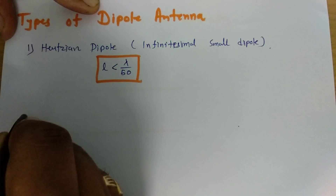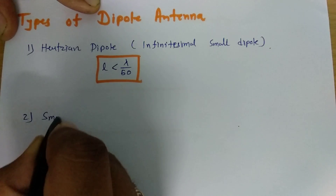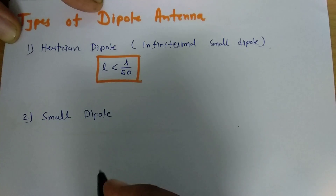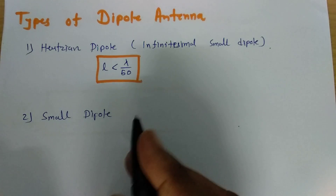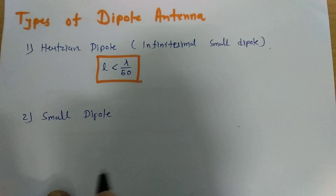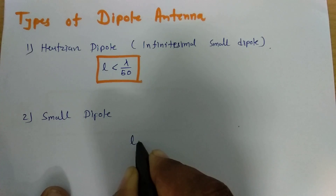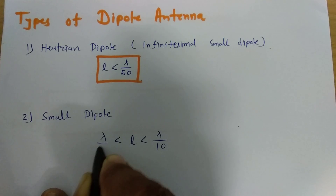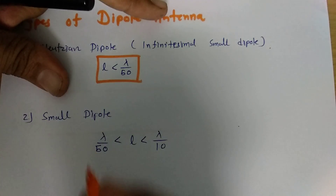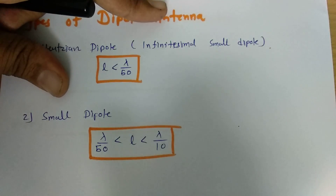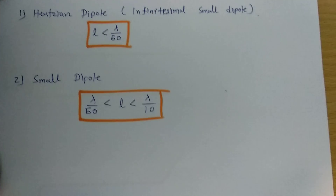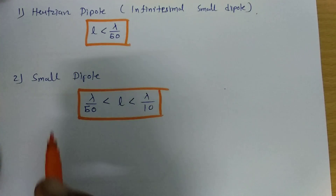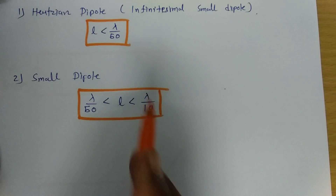The second dipole antenna is the small dipole antenna. Small dipole antenna length is in between lambda by 50 to lambda by 10. So, based on length: if length is lower than lambda by 50 then it will be a Hertzian dipole antenna, and if length of dipole is in between lambda by 10 to lambda by 50 then that will be a small dipole antenna.